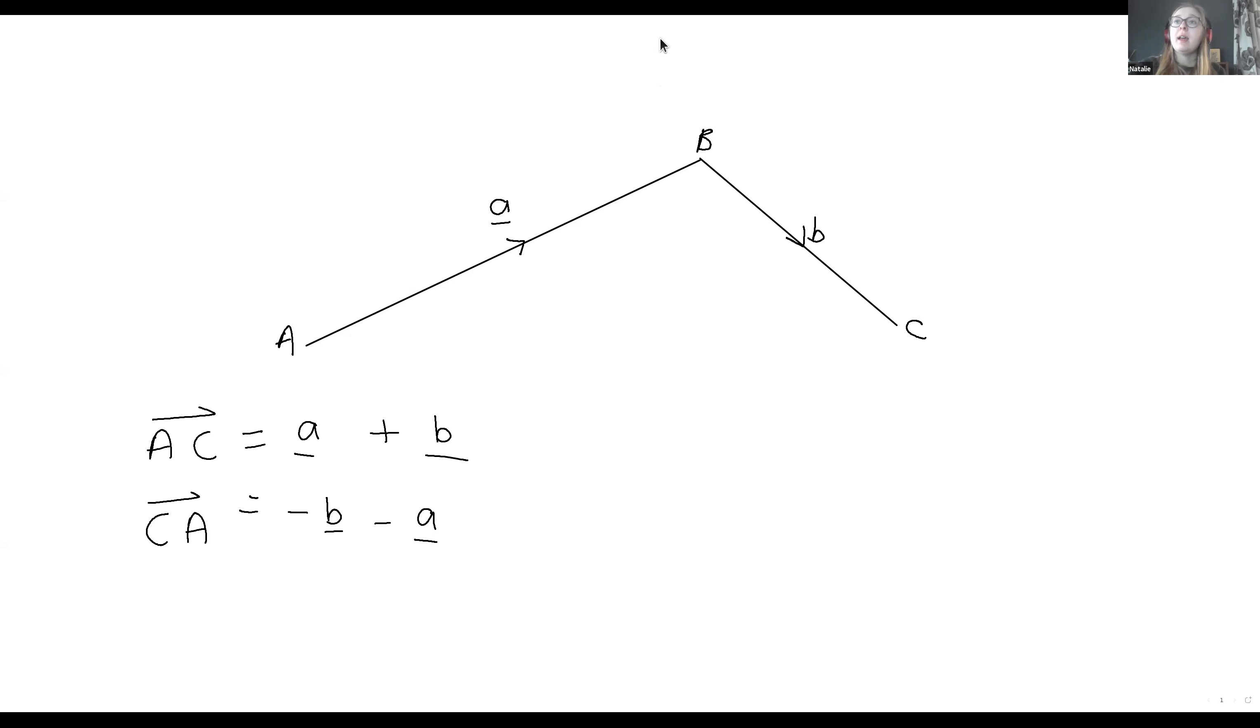We can write vectors as a column vector. A column vector is written in terms of X and Y, so along and then up. So I might have the column vector (4, 3), which means I'm going 4 along and 3 up. I can also write vectors in terms of the unit vector.